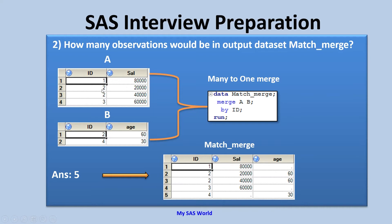The second observation from dataset A is read — ID 2 — and the first observation from dataset B — also ID 2 — is read. Both are matching and part of the by-group, so this observation is merged and written to the output: salary 20,000 and age 60. For the next observation from dataset A, ID is also 2, but there is no next ID 2 in dataset B. When one data set has duplicate values and the other does not, the observation from the non-duplicate data set is retained in the PDV.